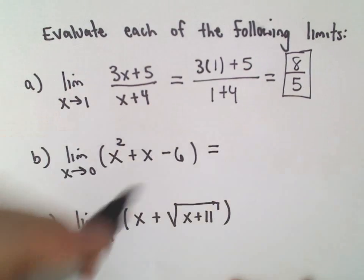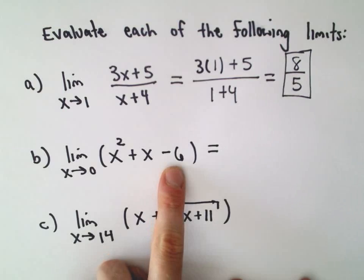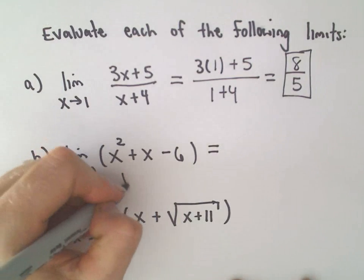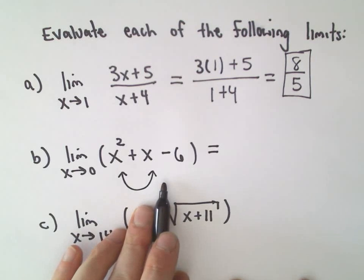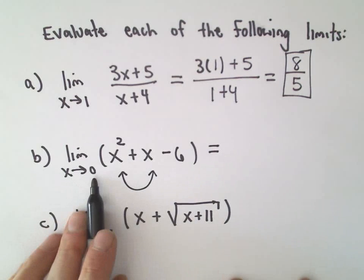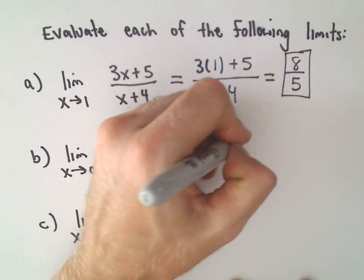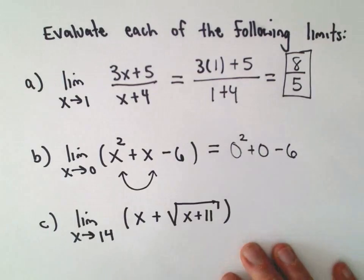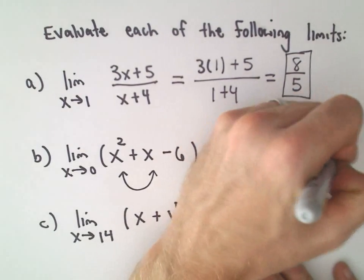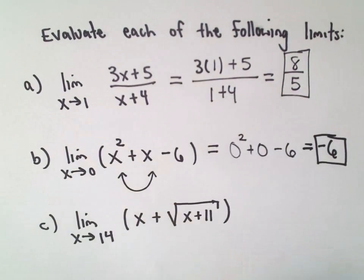Same thing with the next problem. If you think about x squared plus x minus 6, that's just a parabola that's opening upwards. Parabolas are continuous everywhere. In particular, it would be continuous at 0. So I'm just going to plug 0 in so I would get 0 squared plus 0 minus 6, or you would just be left with negative 6 as your solution.